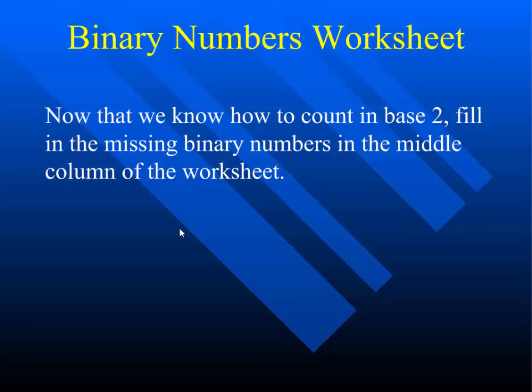Remember the place values: 2 to the 0, 2 to the 1, 2 squared, 2 cubed — that's the same as 1, 2, 4, and 8. So when you have a number like 11, you ask what do I need to add together to get 11? You need an 8, then a 2 gives 10, and add 1 more to get 11.